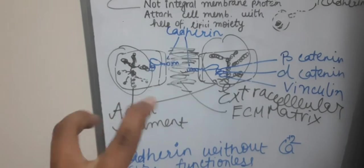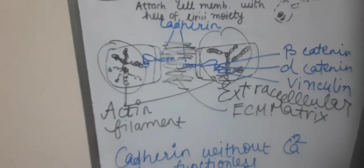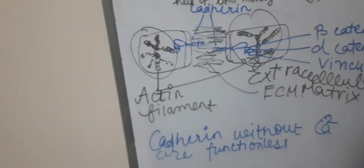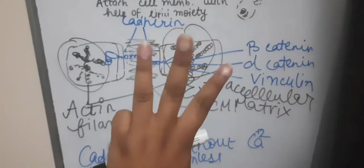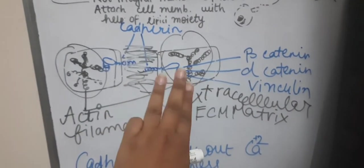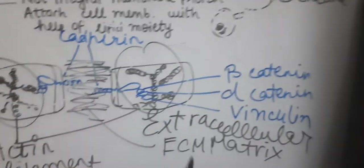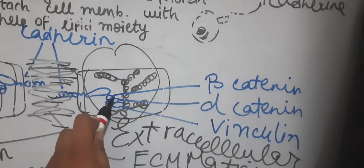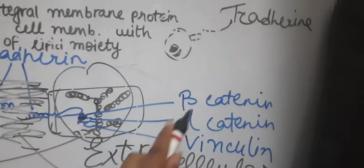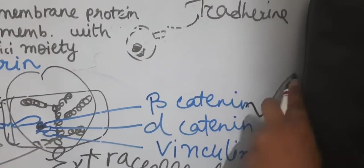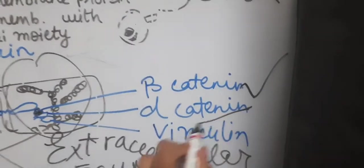Now the cadherin does not directly attach with the actin filament. It needs something in order to attach with the actin filament. What are they? So it needs three things to attach with the cadherin. What are they? First of all, what directly binds with the cadherin is beta-catenin.